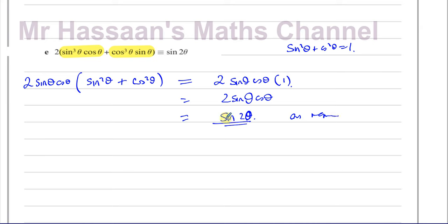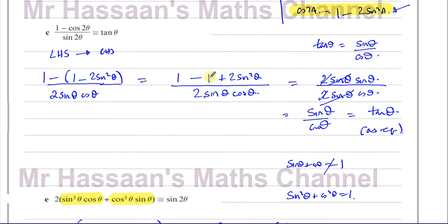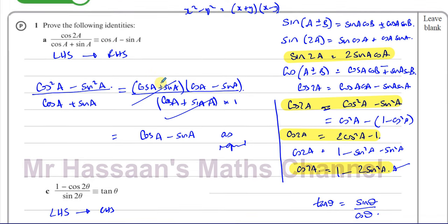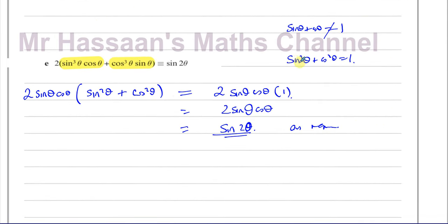Once you factorize out the common factors, this is a pretty simple one. The key thing I noticed was the common factor sine θ cosine θ in both terms. Also remember: don't make the mistake of thinking sine θ plus cosine θ equals 1 — that's wrong. It has to be sine squared θ plus cosine squared θ equals 1. A lot of people make that mistake.